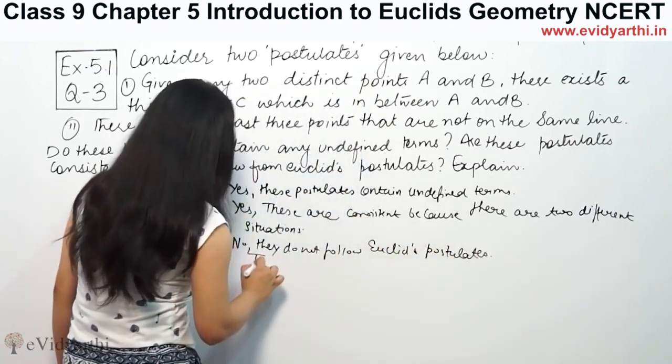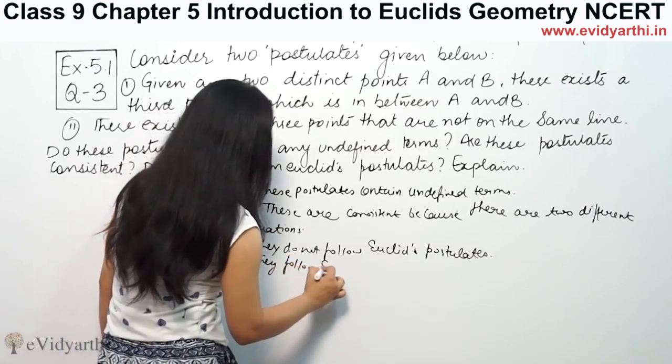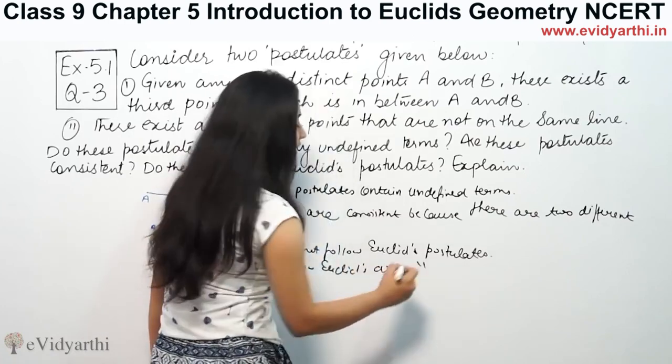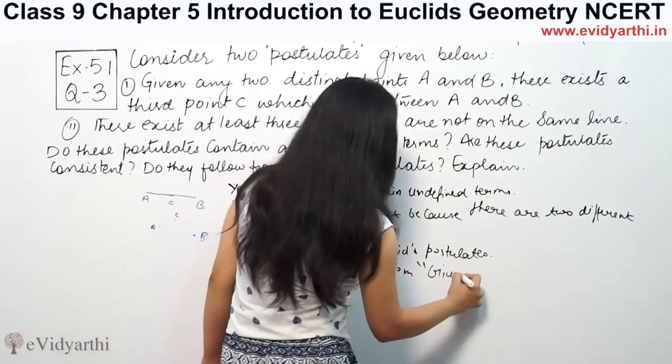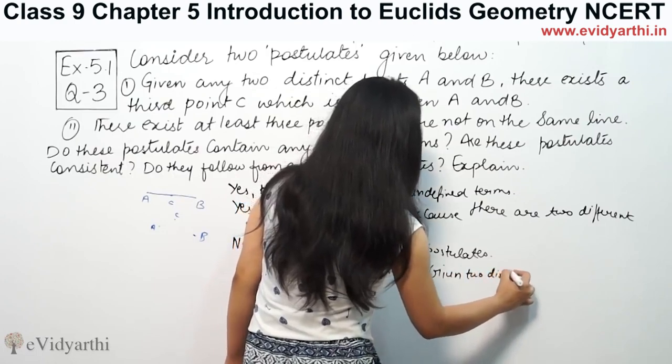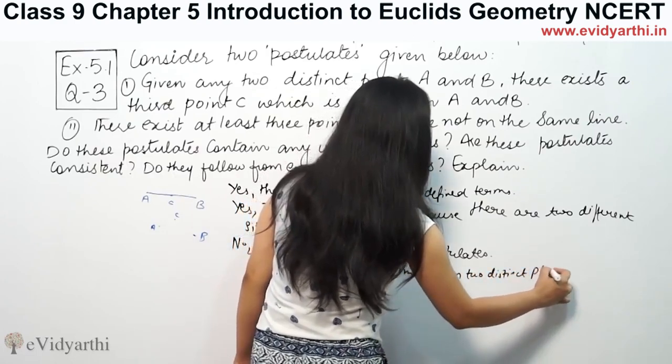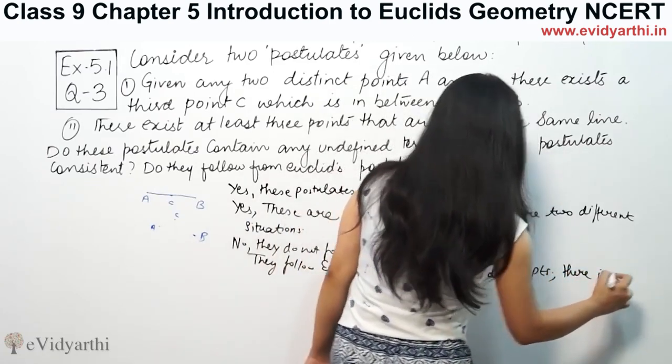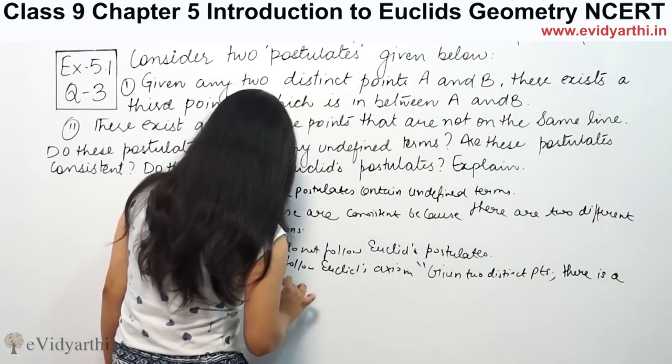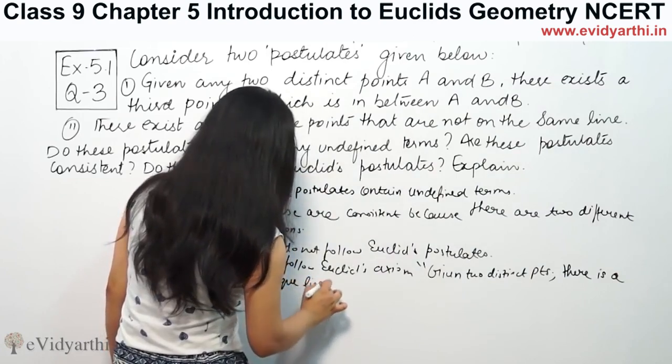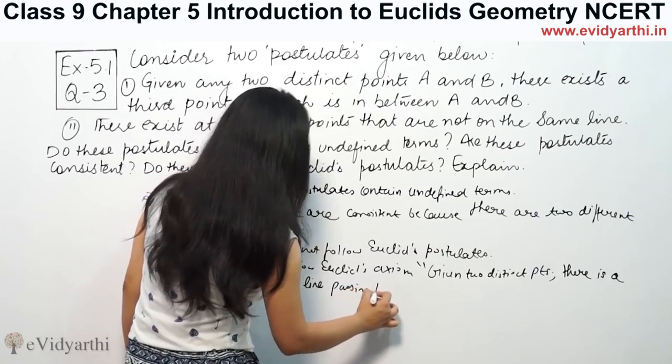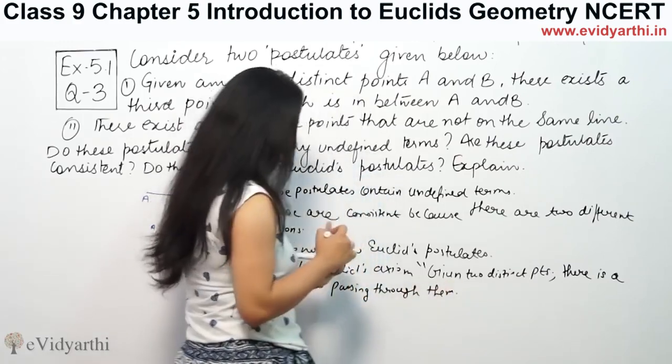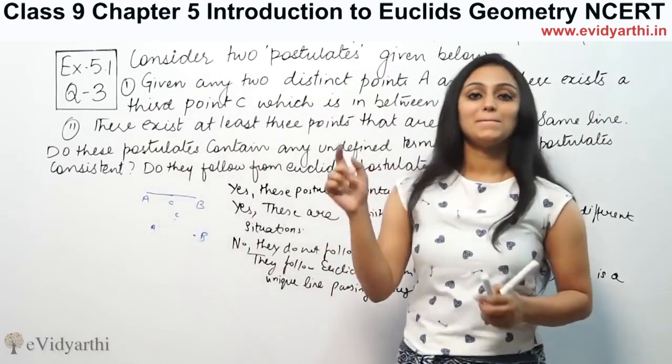If you follow Euclid's axiom, Euclid's axiom, that axiom is given two distinct points. Two distinct points. There is a unique line. Unique line passing through them. Two points say, unique line and joining object, pass through them.